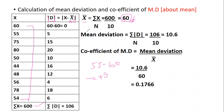Continuing: 80 − 60 = 20; 50 − 60 = 10; 44 − 60 = 16; 48 − 60 = 12 (modulus, so positive); 56 − 60 = 4; 78 − 60 = 18; 54 − 60 = 6. We have found all the modulus d values. Now add them all up: Σ|d| = 106.